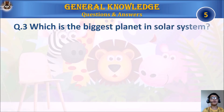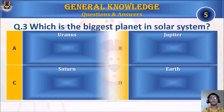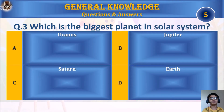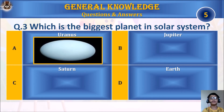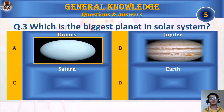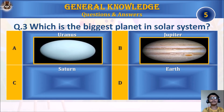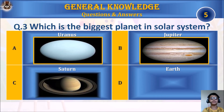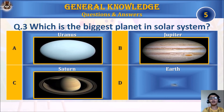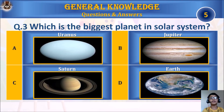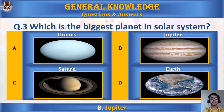Question 3: Which is the biggest planet in the solar system? A. Uranus, B. Jupiter, C. Saturn, or D. Earth. Your time starts. The answer is B. Jupiter.